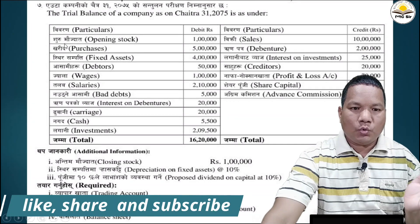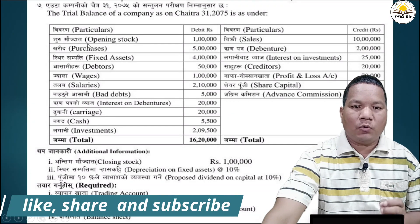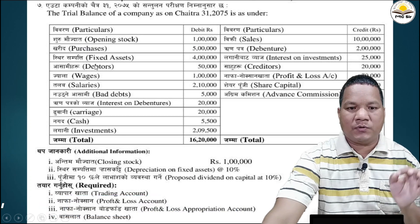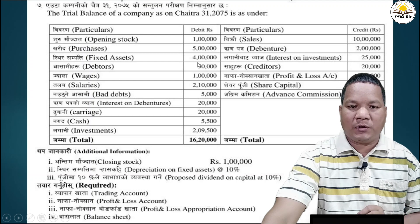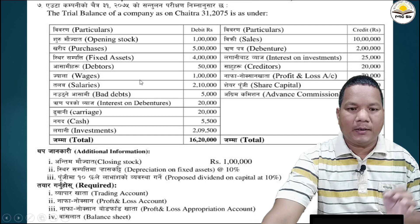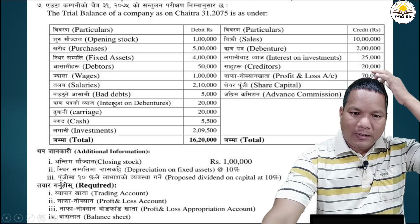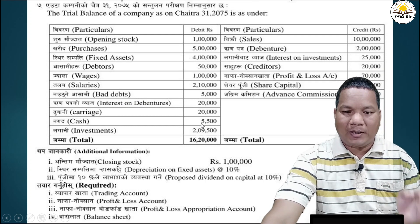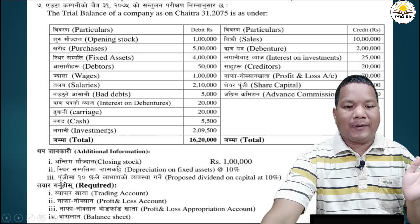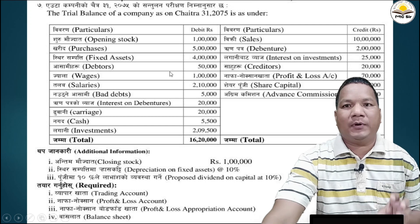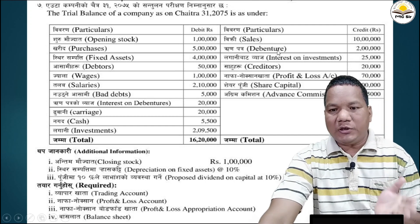Trial balance - on the debit side: opening stock 1 lakh rupees, purchases 5 lakh rupees, fixed assets 4 lakh rupees, debtors 50,000, wages 1 lakh, salaries 2 lakh 10,000, bad debts 5,000, interest on debentures 20,000, carriage 20,000, cash 5,500, investment 2 lakh 9,500.